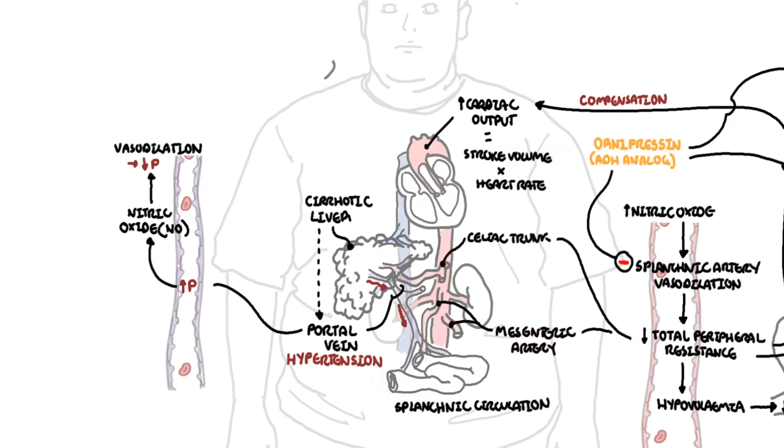Transjugular intrahepatic portosystemic shunt is a pretty cool thing. It's literally what the name says or suggests—it's transjugular from the jugular vein. A shunt is placed between the portal vein and the hepatic vein. This shunt allows blood to bypass the liver, reducing portal venous pressure.